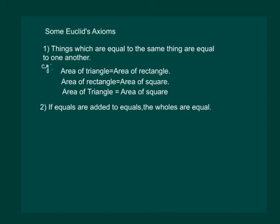Another Axiom says that if equals are added to equals, the wholes are equal. For example, if x is equal to y, and we add 2 on both sides, then x plus 2 will be equal to y plus 2.